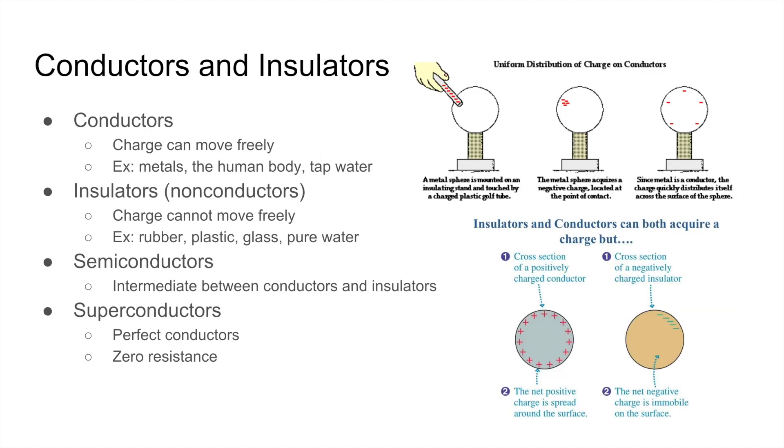There are many different types of materials, but the most important are conductors and insulators. Conductors are materials where charges can flow freely. For example, it could be metals, the human body, or tap water. In a conductor, since electrons can flow freely, the electrons, since they have the same charge, they want to get away from each other as far as possible. So that means that the net charge will be spread along the surface of the conductor.